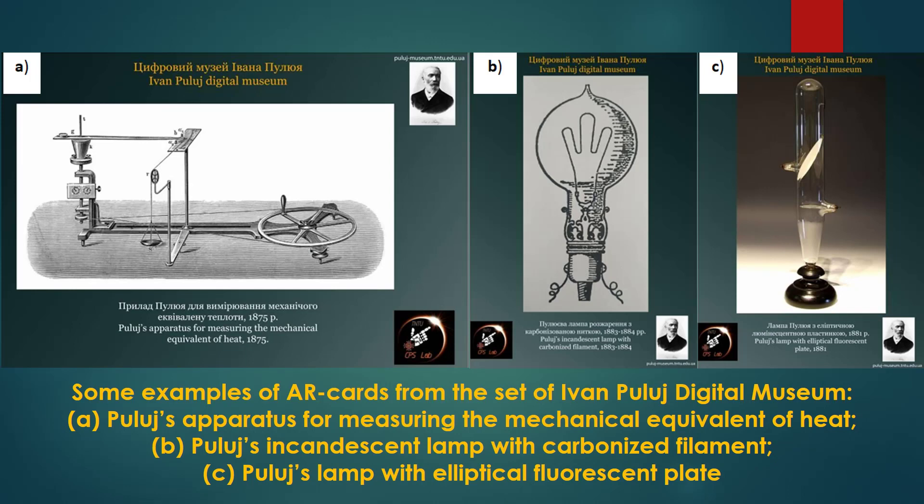To demonstrate 3D models of the most remarkable inventions of Ivan Poulou, a set of 12 cards were created which have embedded markers of augmented reality. For this, archival drawings and photos of exhibit devices developed by the famous physicist were selected. Some examples of them we can see on this slide.